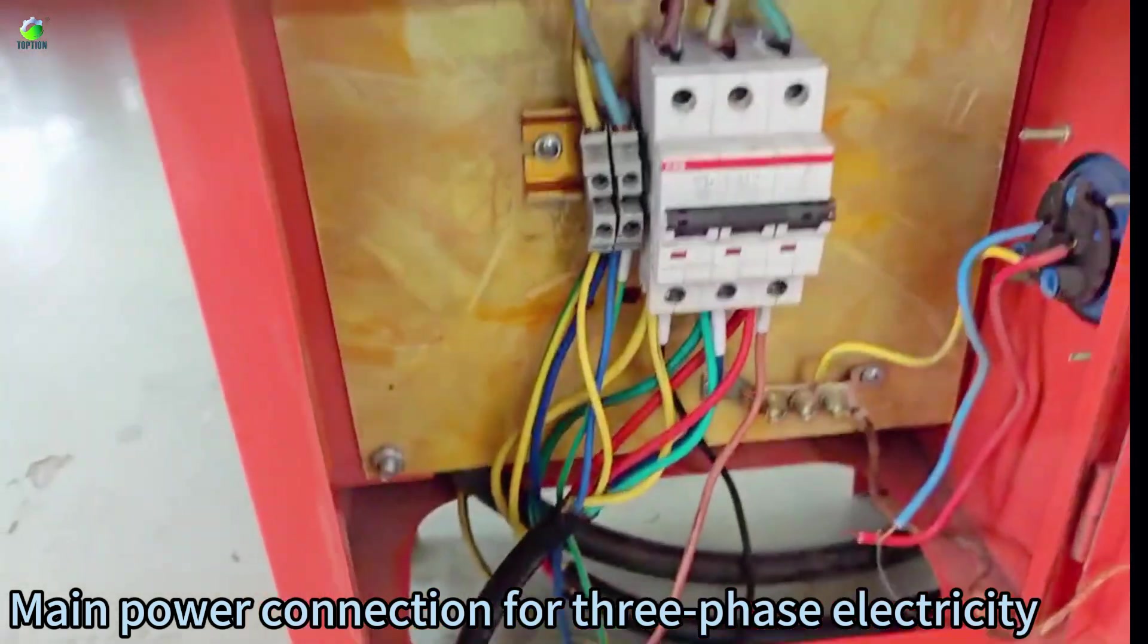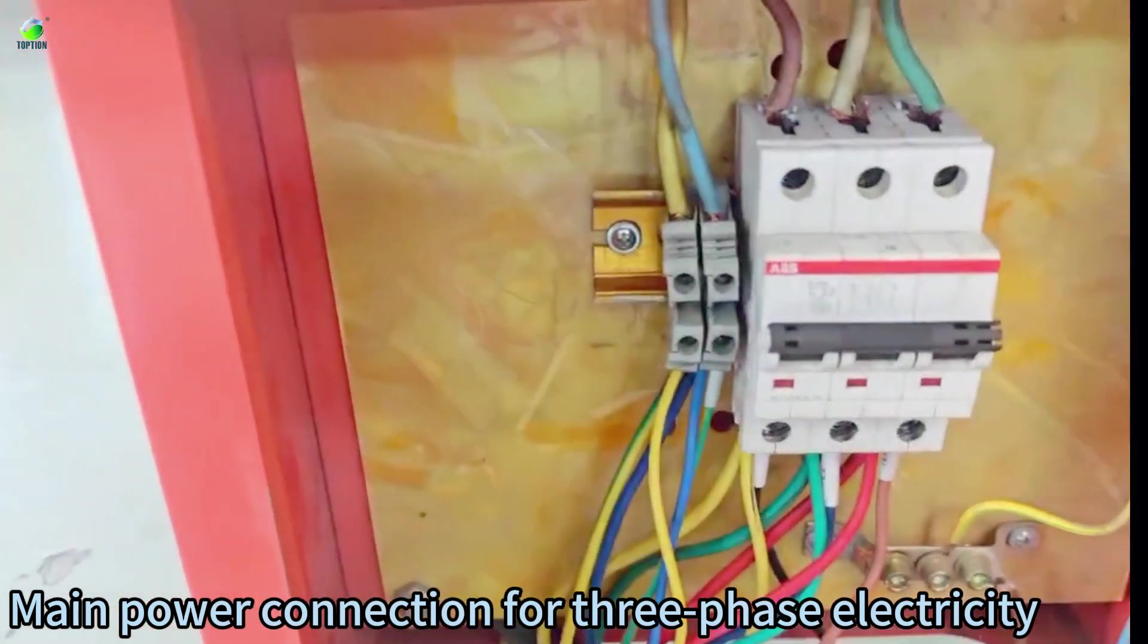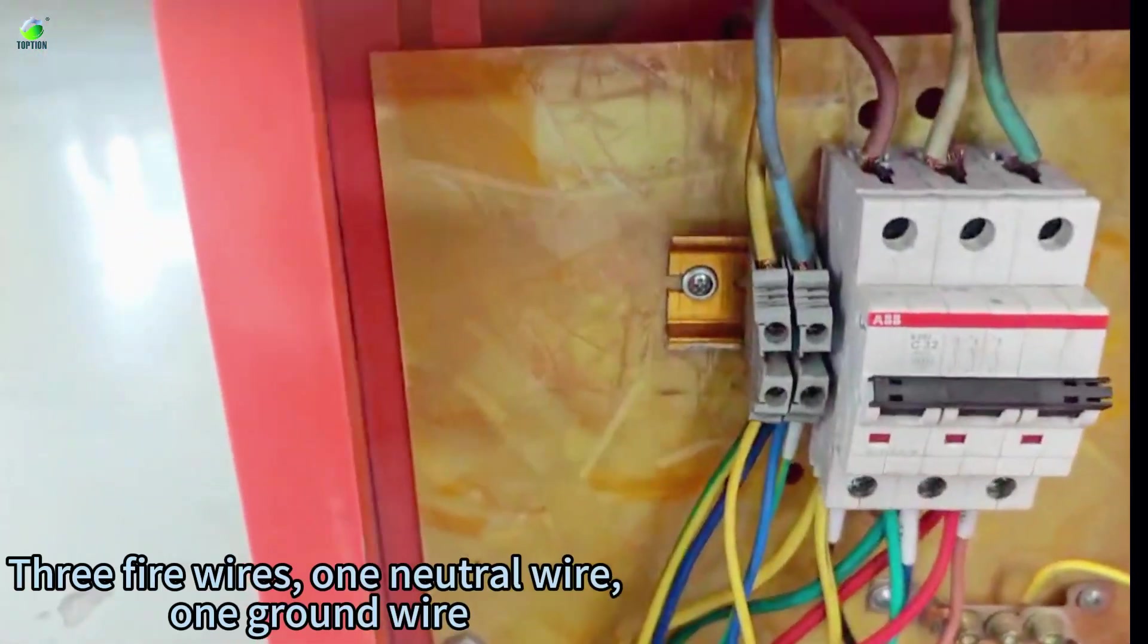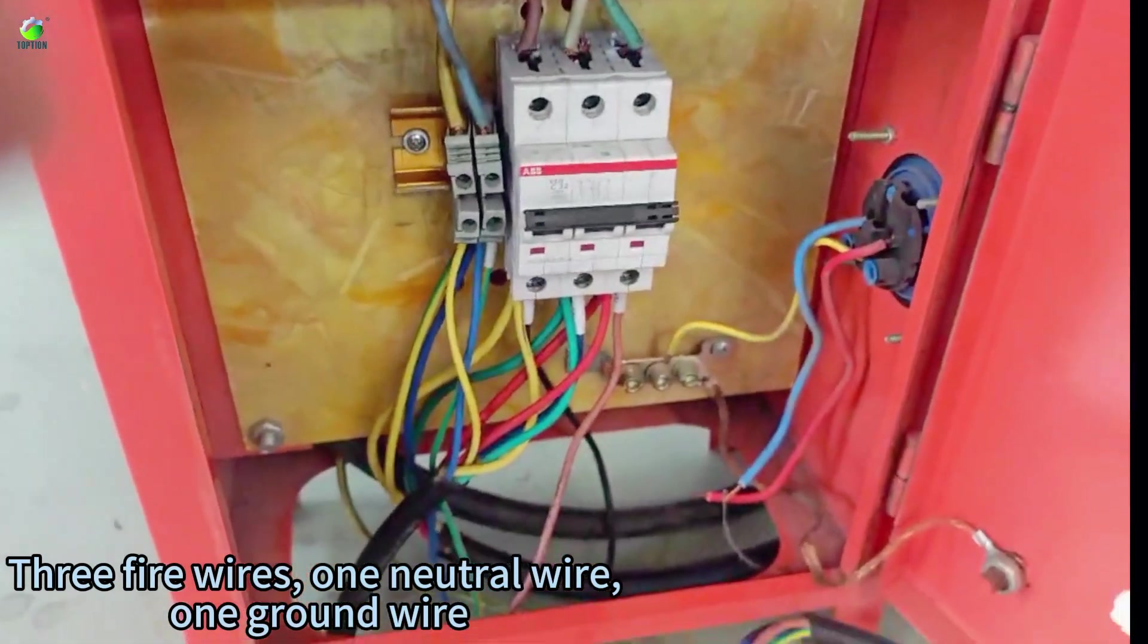Main power connection for 3-phase electricity: 3 fire wires, 1 neutral wire, 1 ground wire.